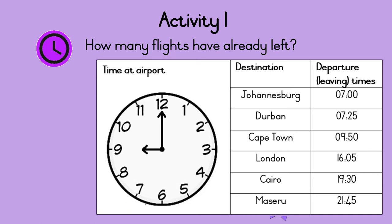The flights that have already left must have had a departure time that was earlier than 9 o'clock in the morning. Which flights were earlier than 9 o'clock in the morning? Let's find them together. 7 o'clock in the morning is earlier than 9 o'clock in the morning, and 25 minutes past 7 is also earlier than 9 o'clock in the morning. So there were two flights that have already left.